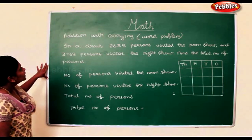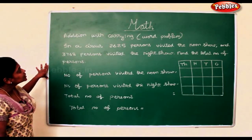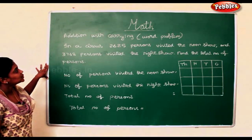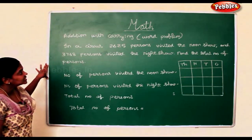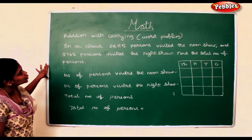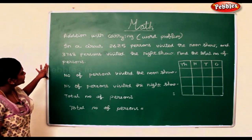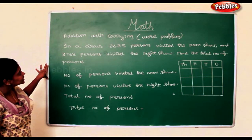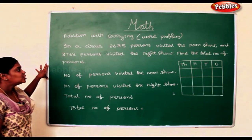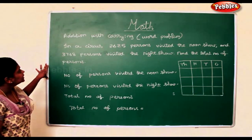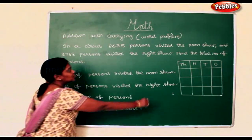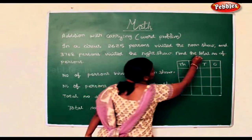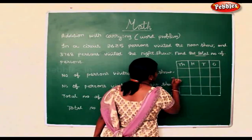Now in a circus, 2625 persons visited the noon show and 3768 persons visited the night show. Find the total number of persons together. So for total, we use addition.